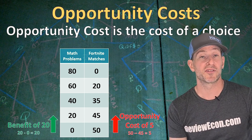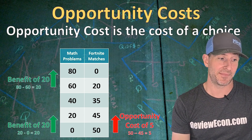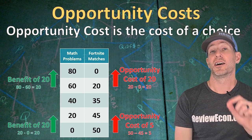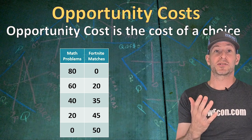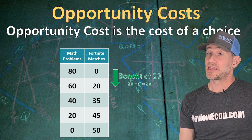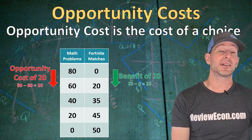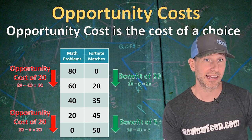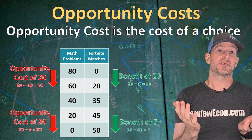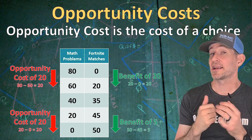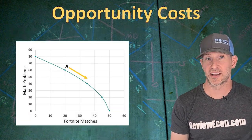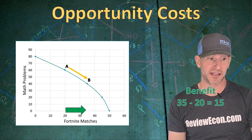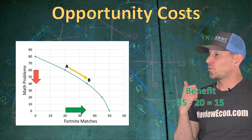Up at the top of that table, I can go from completing 60 math problems up to 80 math problems. Those last 20 math problems come at a large Opportunity Cost of 20 Fortnite matches. We can go the opposite direction and look at the Opportunity Cost of Fortnite matches. That first 20 Fortnite matches comes at an Opportunity Cost of 20 math problems, and the last 5 Fortnite matches come at an Opportunity Cost of 20 math problems. To find the Opportunity Cost of any amount, you just look at the other side and find the difference. On the graph, moving from point A to point B, we're gaining 15 Fortnite matches — that's our benefit — but it comes at a cost of 20 math problems.